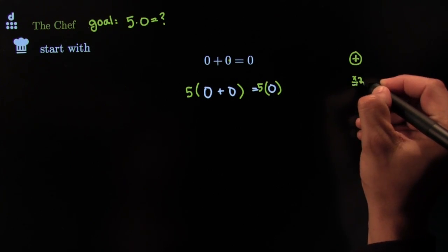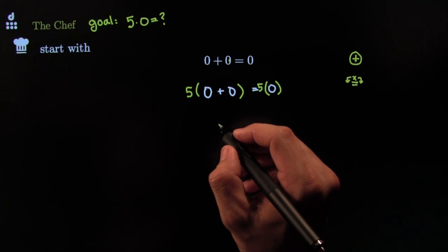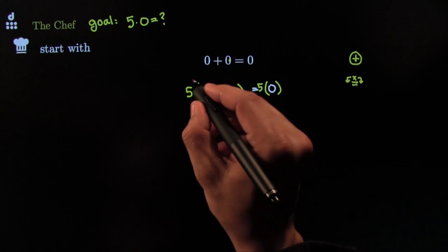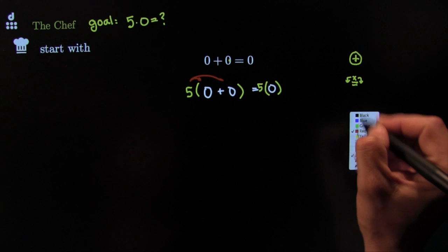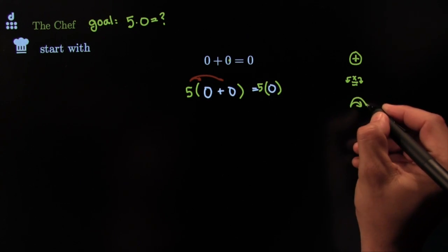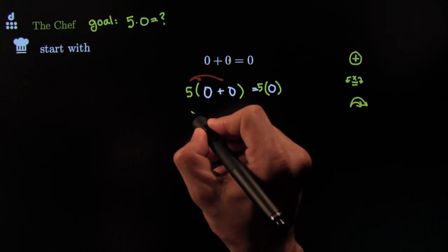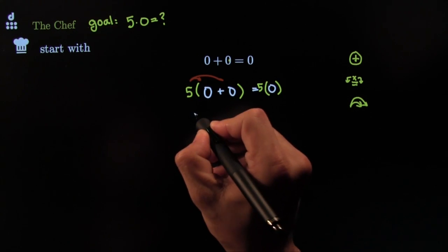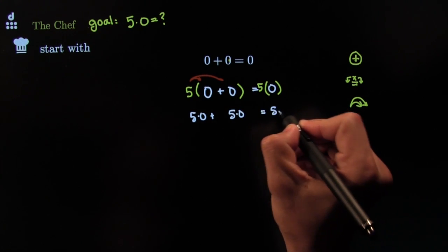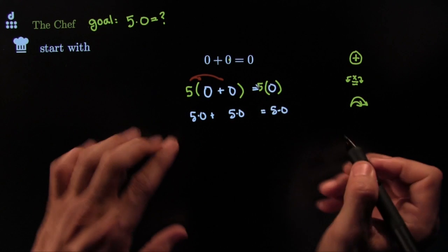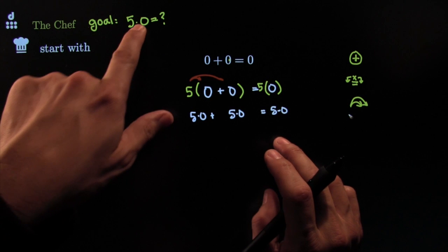Multiplying both sides by the same number is justified by the cancellation law of multiplication. Next, I note that I can distribute — that's the distributive law — and that's exactly what I'm going to do. Distributing gives us: five times zero plus five times zero is equal to five times zero. That's what happens when you distribute.